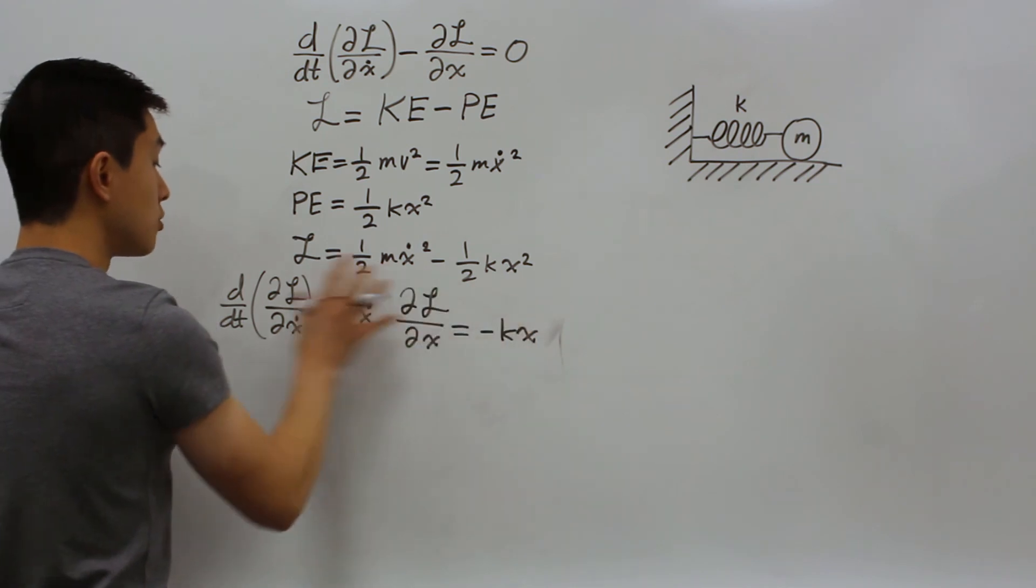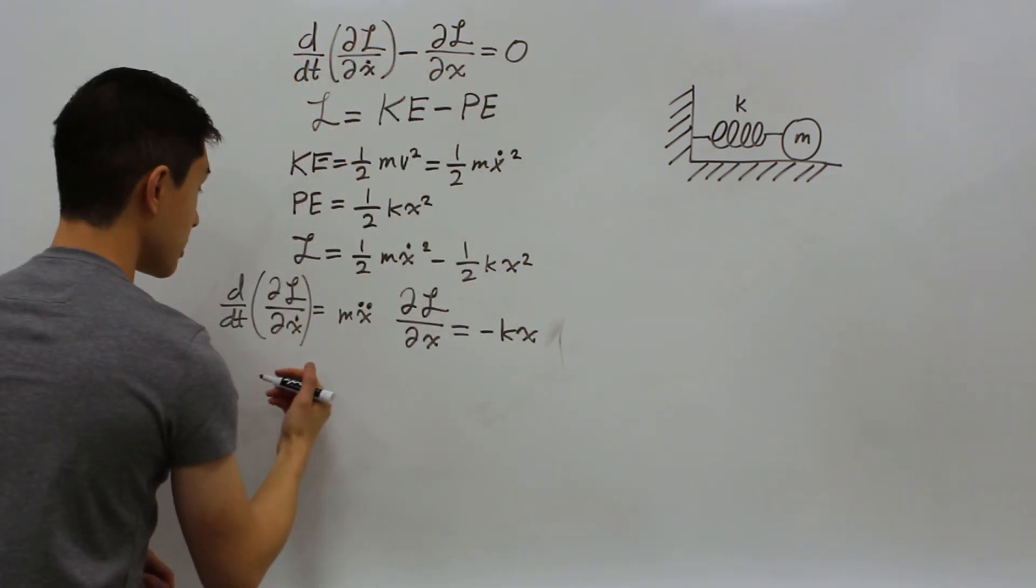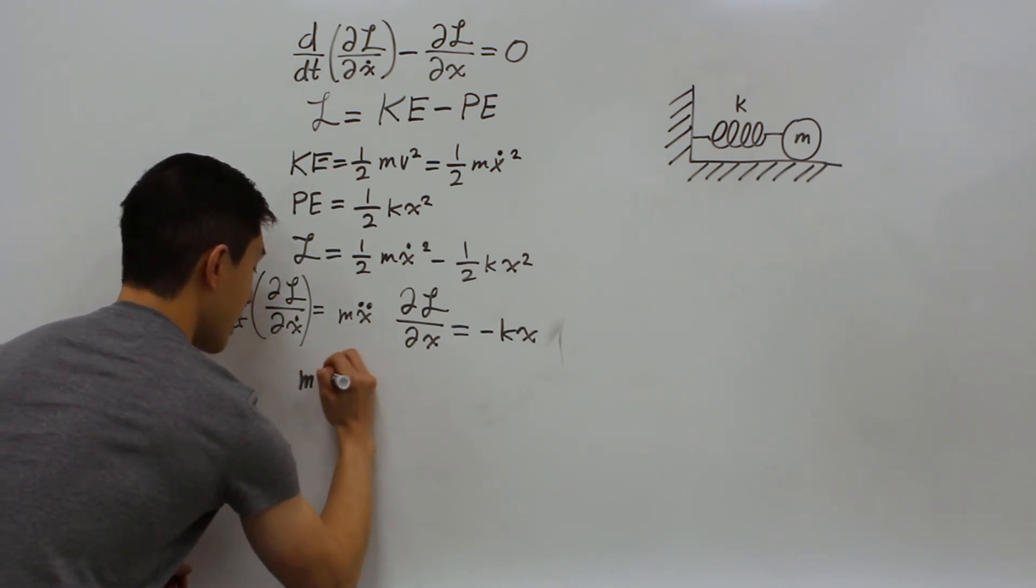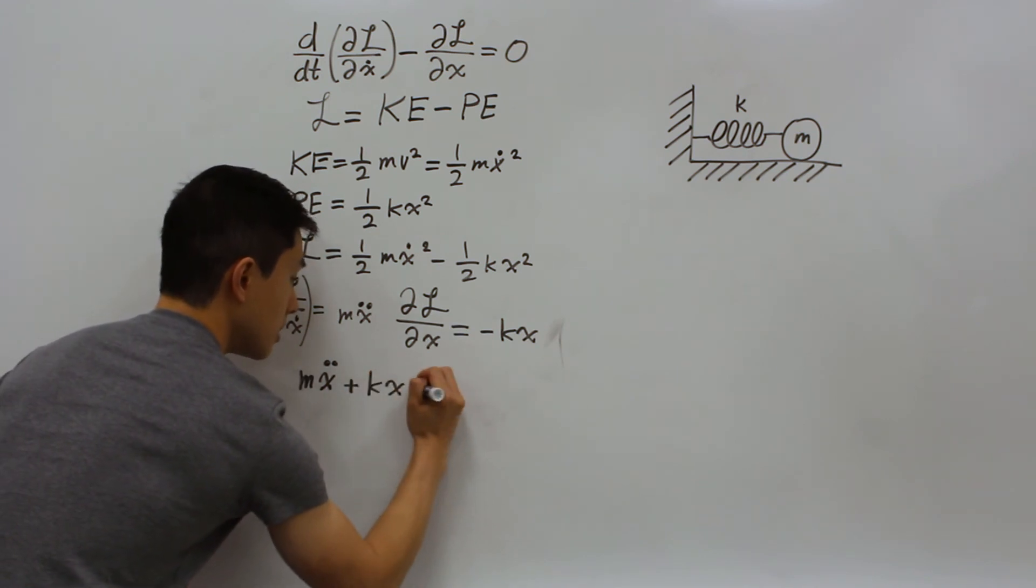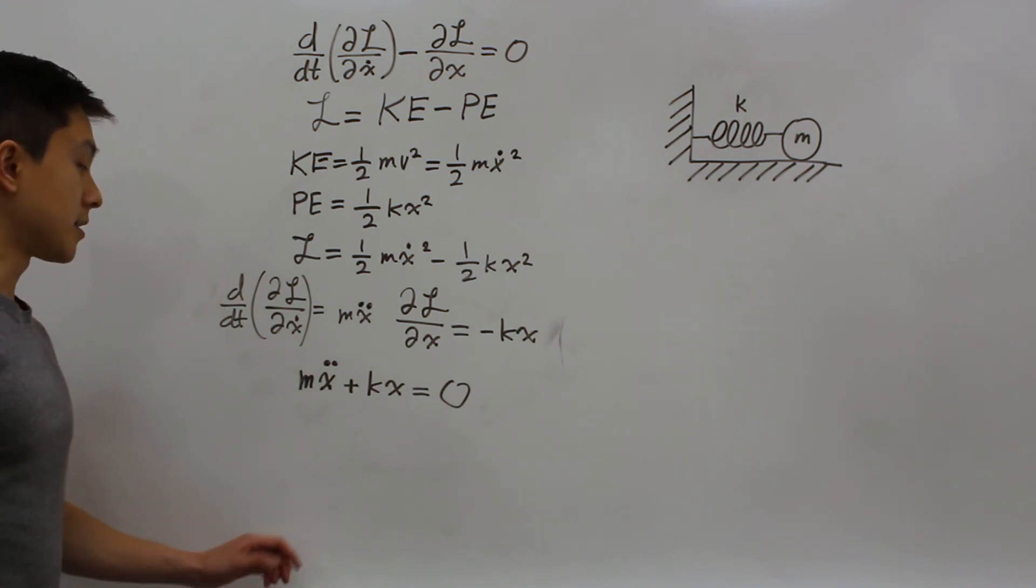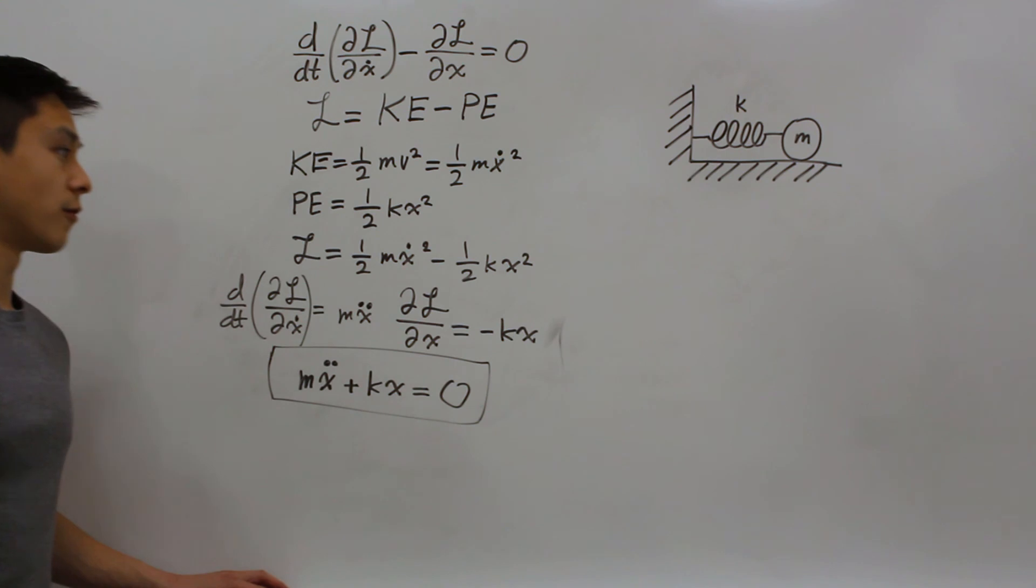Now that we have these two parts of the Euler-Lagrangian equation, we'll put them together and that gives us our differential equation. So our differential equation of motion is just going to be mx double dot plus kx equals 0. And this is our differential equation of motion for our spring mass system.